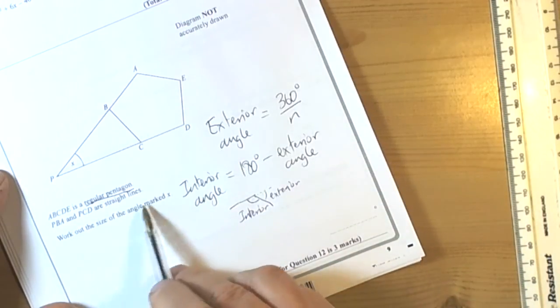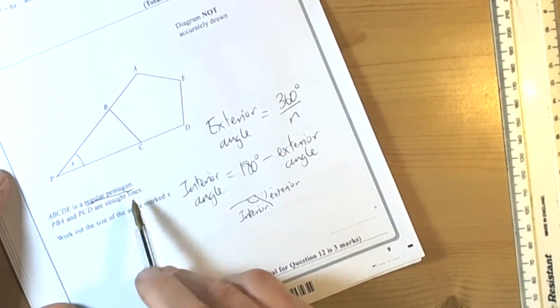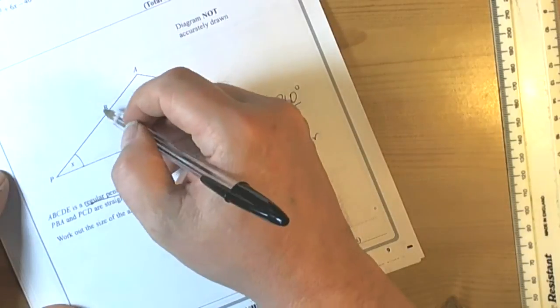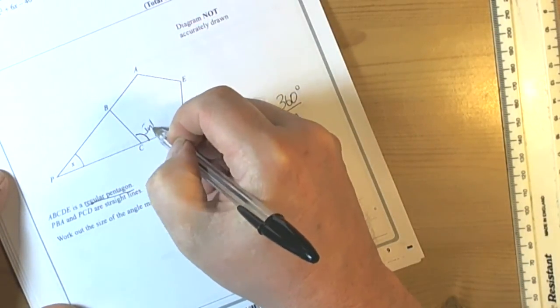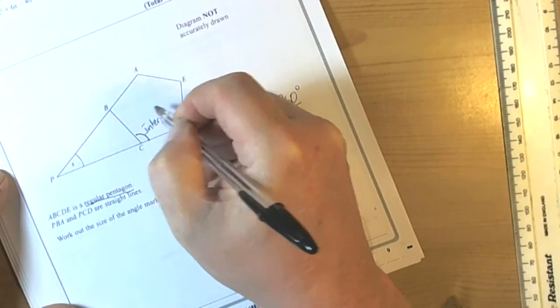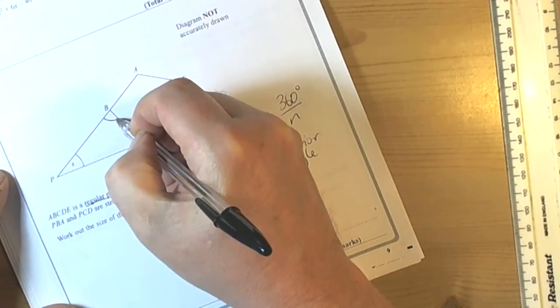So let's have a look. I want to work out PBA. So the straight lines mean that this angle here is an interior angle and this angle here is an exterior angle.